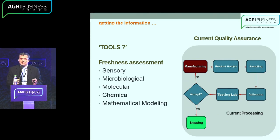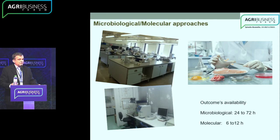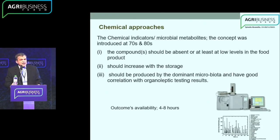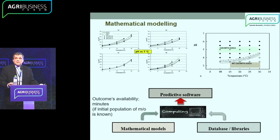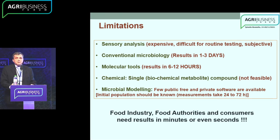All those analyses always relate to the microbiological activity because this is what freshness is directly linked to. We might have sensory evaluation where we assess the smell, the touch, the appearance. We might opt for a direct identification of microorganisms through molecular techniques or microbiological techniques, or we might opt for chemical approaches. And lately we also apply mathematical modeling approaches in order to predict the development of germs. All those techniques, however, have some limitations.